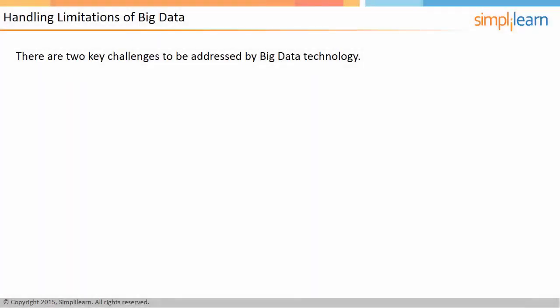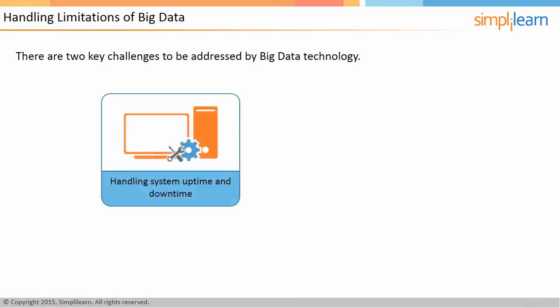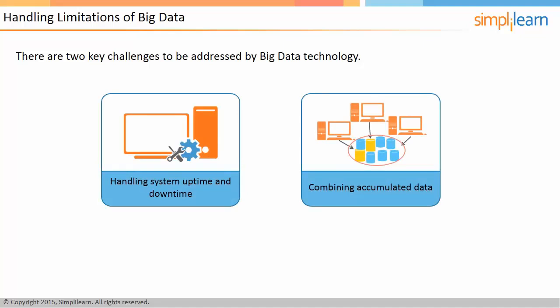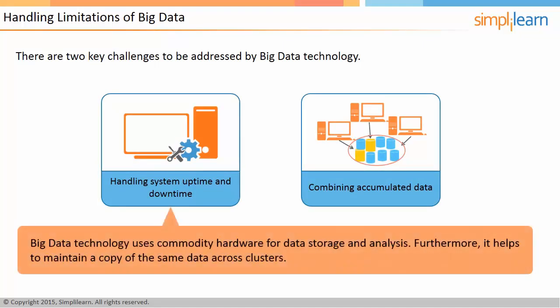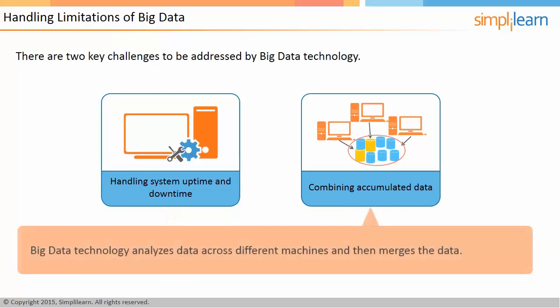There are two key challenges to be addressed by big data technology: handling system uptime and downtime, and combining data accumulated from all systems. To overcome the first challenge, big data technology uses commodity hardware for data storage and analysis and maintains a copy of the same data across clusters. To overcome the second challenge, it analyzes data across different machines and then merges that data.